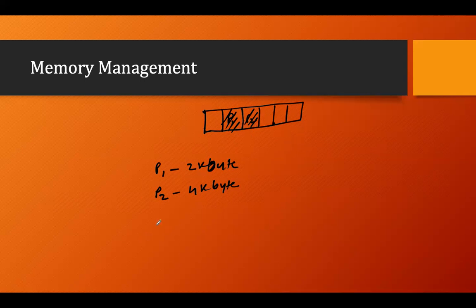If P3 also arrives with a size of 5KB, we store it somewhere here in memory as well. So you can see that each process is stored in the memory as a contiguous allocated block.